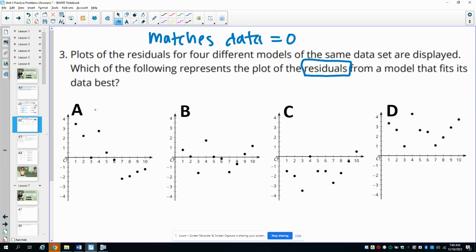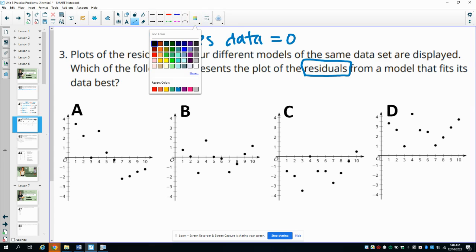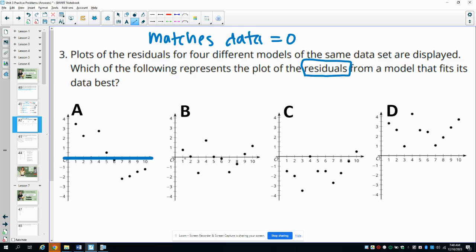So in order for the model to best match the data, we want the ones that are closest to a residual of 0. So this x axis, where the residual is 0, we want the data points to be closest to that. And so we see that in plot B they're closest. Because we've got some up here at like 2, 3, and 4, and then down here at negative 2. Kind of the highest here is 2, and the lowest is negative 2. Versus here, you're going all the way down to negative 4. Here, we're going above 4. So B models it the best.